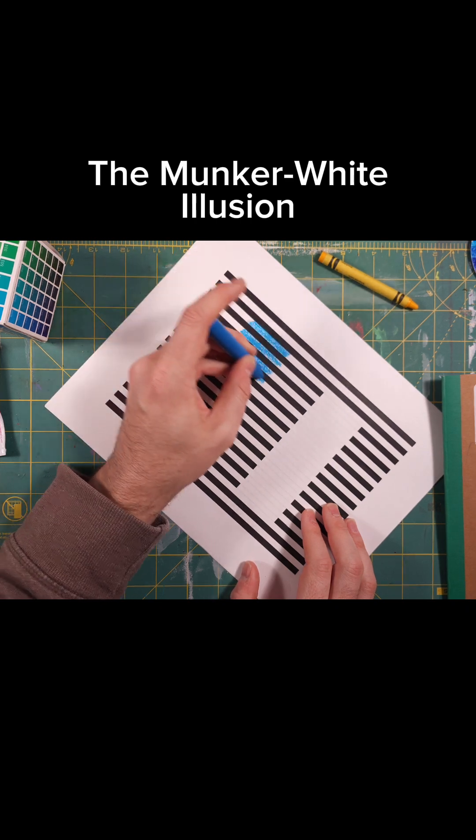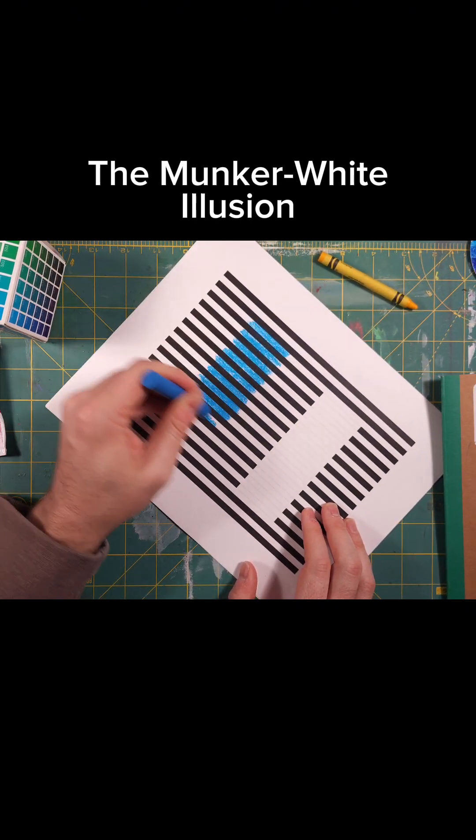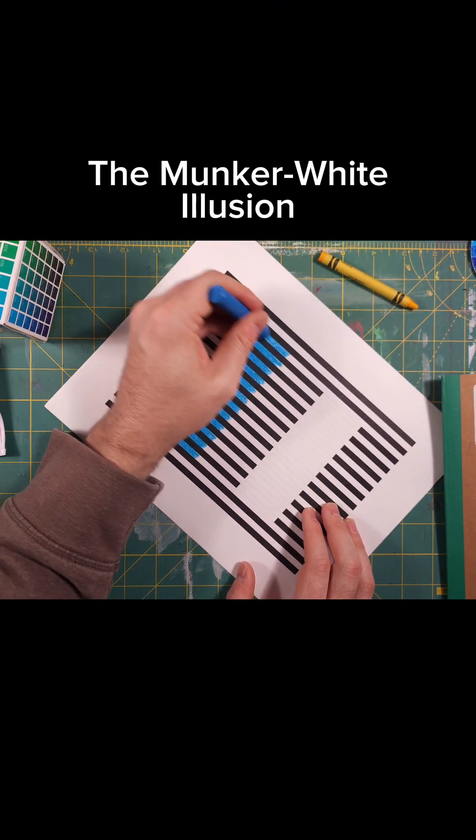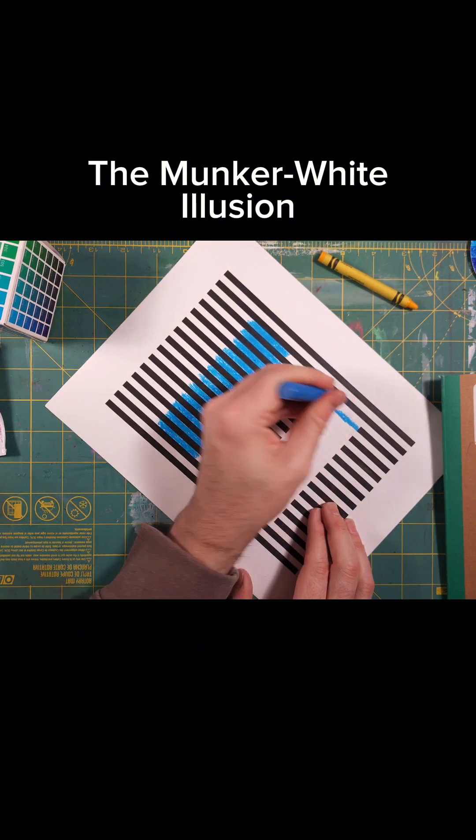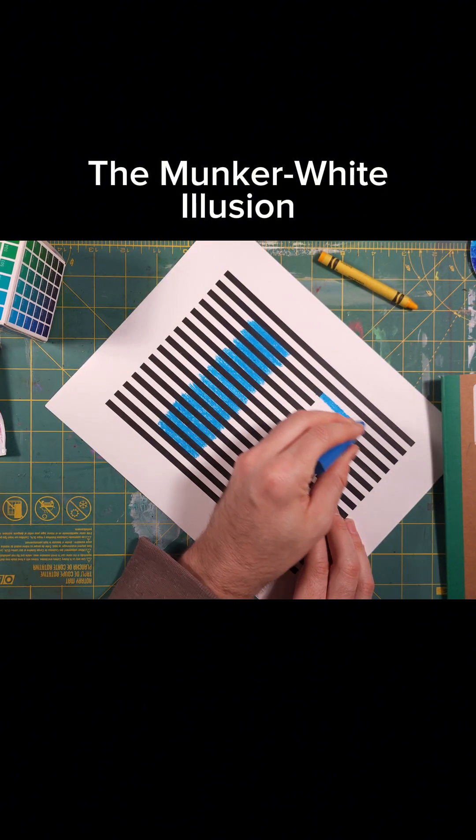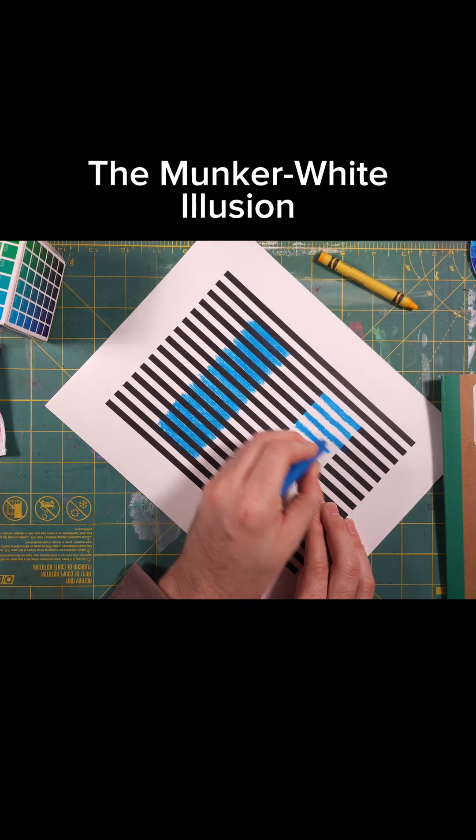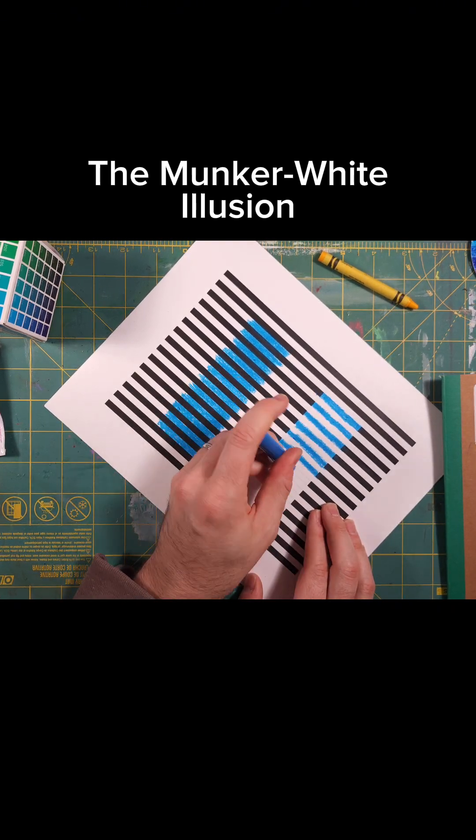First, I'm going to color in between the black stripes, and I get a deep blue. And then I'm going to color along the black stripes, connecting them. And the color that you're going to perceive, hopefully, is a brighter blue.